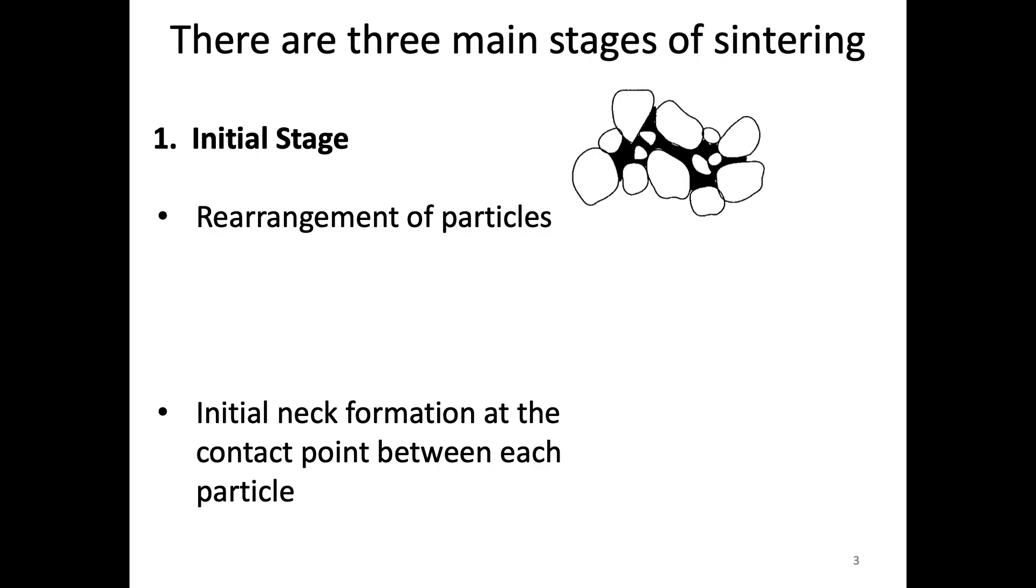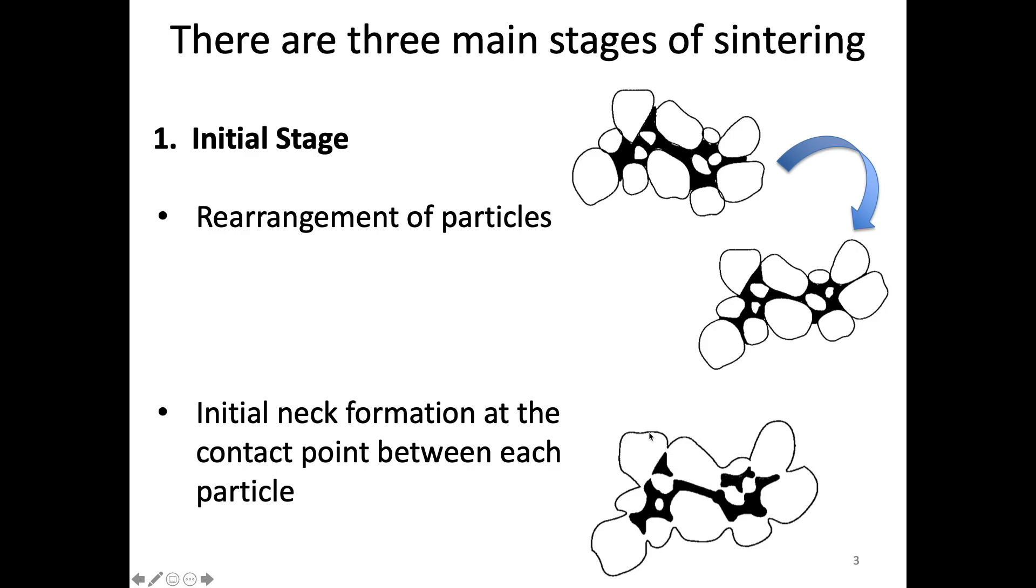Additionally, this is where we have the first formation of a bond between particles. And so this is what we refer to as a neck. And so that initial neck forms. This just kind of shows the rearrangement of particles. You can maybe see a slight lessening of the dark space in between. And then when we form the neck, that initial bond, that's at the contact point between particles. So these are what's happening in this initial stage.